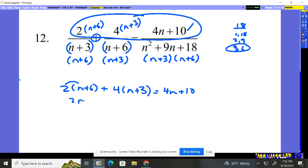All right, let's distribute through. 2n plus 12 plus 4 distribute through. 4n plus 12 equals 4n plus 10. 2n and 4n, that's 6n. 12 and 12 is 24. Equals 4n plus 10.